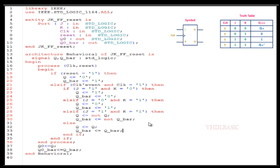In the else statement, if all three if conditions fail — meaning both J and K are 0 — we assign Q equal to Q and Q-bar equal to Q-bar, preserving the previous state. Now I am going to simulate this code.